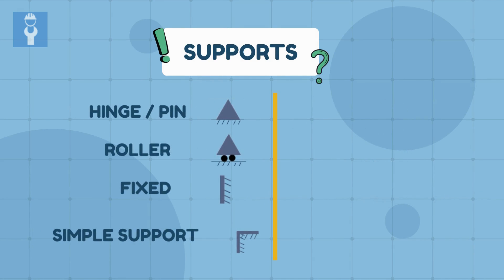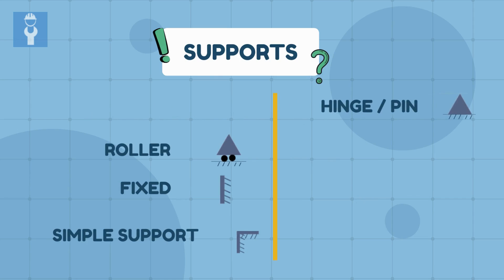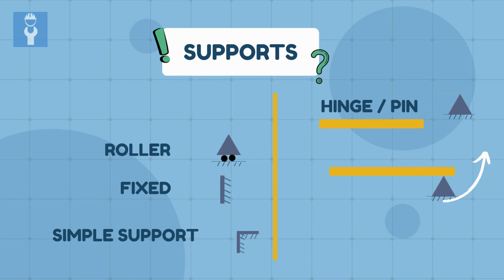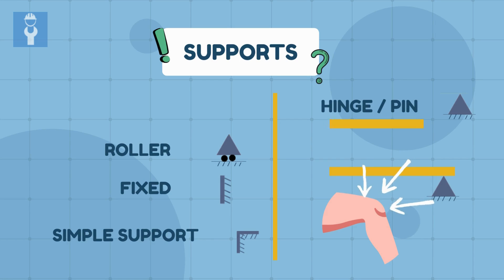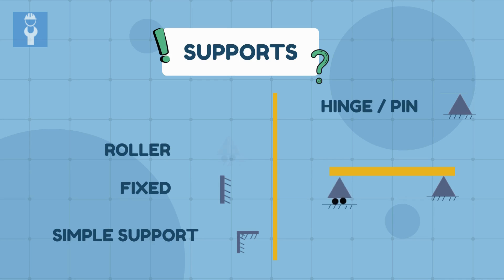The next on our list of supports is hinge support or pin support. Pin support is pretty common in civil engineering. A pinned support does not allow movement either vertically or horizontally but allows for rotation. In most cases, a pinned support only allows for twisting in one direction. A good example is a human knee — it provides for turning in one direction but resists lateral movements. It is rare to find ideal pinned supports in practice; however, simply supported beams are typically regarded as pinned.